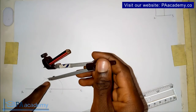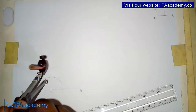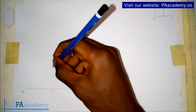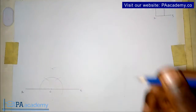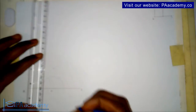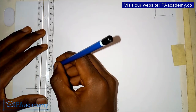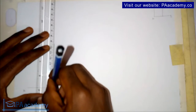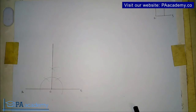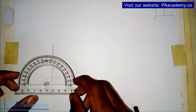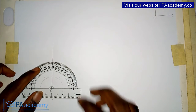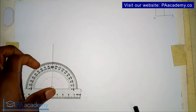Then on the other arc also you draw an arc from that point. From the point of intersection, you join it down to point C. Having done that, you've been able to draw a perpendicular line to line AB. If you bring in a protractor to confirm, you can see that it is at 90 degrees. That is the first scenario.